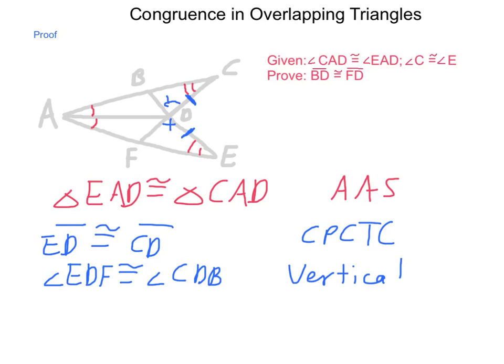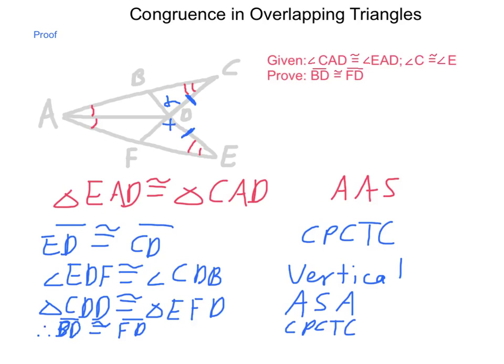This tells us that triangle CBD is congruent to triangle EFD by angle-side-angle. And, if that's true, then we can conclude, therefore, that BD is congruent to FD, again, by corresponding parts of congruent triangles being congruent.